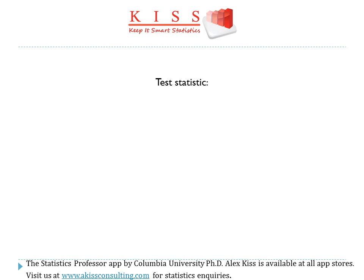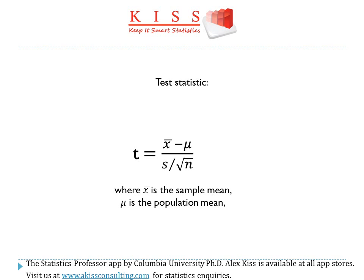Our test statistic is of the form t equals x-bar minus mu, divided by s over the square root of n, where x-bar is the sample mean, mu is our population mean, s is the sample standard deviation, and n is the size of our sample.